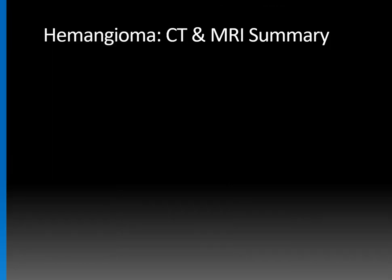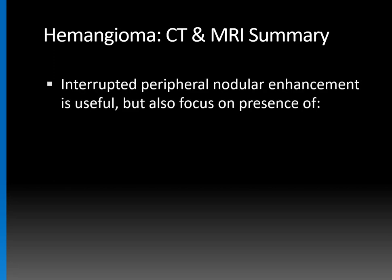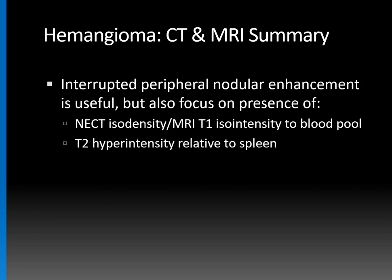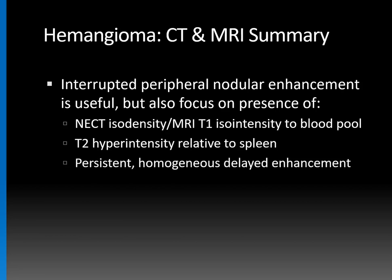To summarize the appearance of hemangioma on CT and MRI: the interrupted peripheral nodular enhancement pattern is extremely useful, but you should also focus on the non-contrast isodensity to blood pool on CT, non-contrast MRI T1 isointensity to blood pool, T2 hyperintensity relative to the spleen — a key feature — and persistent homogeneous enhancement on delayed phase imaging.